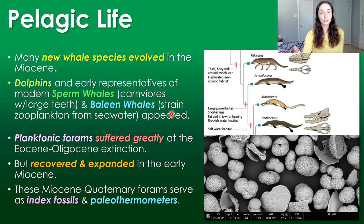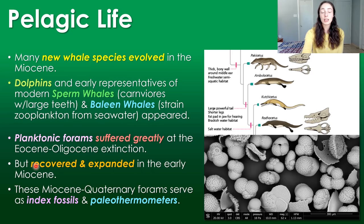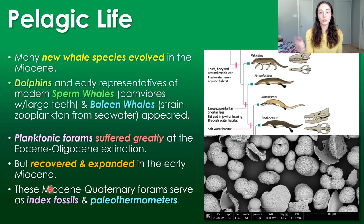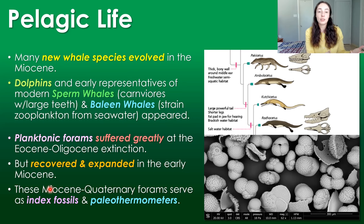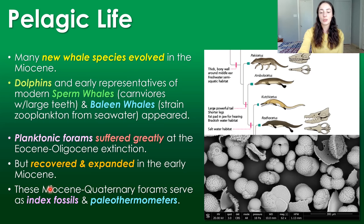Planktonic forams are also a major event during the Miocene. They recovered greatly from the Eocene-Oligocene extinction caused by rapid cooling, and expanded in the early Miocene. They spread so well and so widespread globally that they act as great index fossils and paleothermometers for the Miocene, Pliocene, and Quaternary. Index fossils are widespread fossils useful for relatively dating and correlating strata across the world. Paleothermometry using forams means we can estimate past water temperatures from oxygen isotope ratios taken from their calcitic shells.